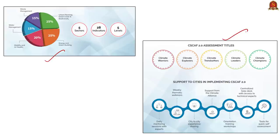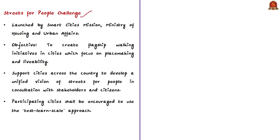The government has also come up with the Streets for People Challenge. Post-lockdown, our cities may face many challenges in providing safe, affordable and equitable modes of transport while maintaining social distancing. The key issues which must be addressed are limited public transport options and narrow, crowded sidewalks, particularly in marketplaces.